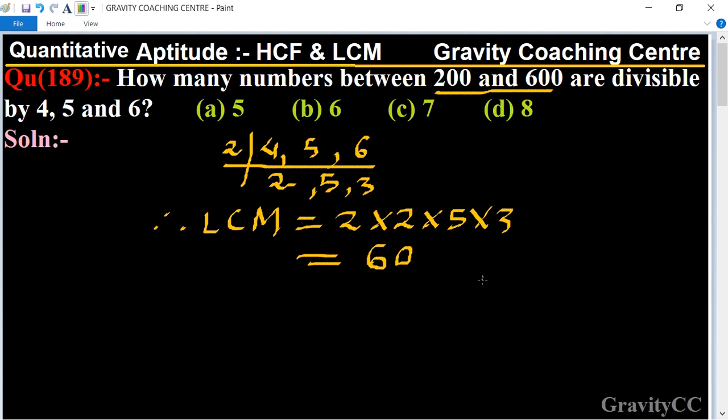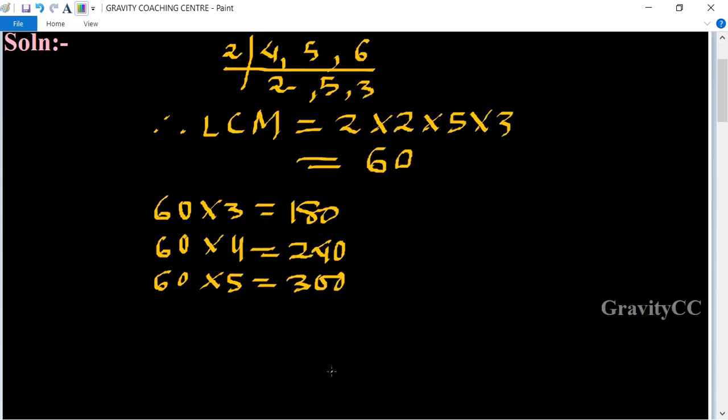Now we multiply 60: 60 into 3 equal to 180, 60 into 4 equal to 240, 60 into 5 equal to 300, 60 into 6 equal to 360, and continuing with more multiples up to 60 into 10 equals 600.